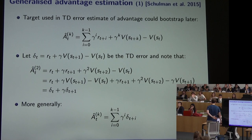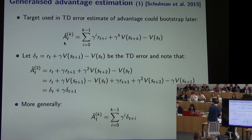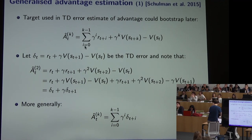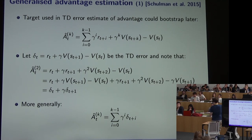This yields an approach called Generalized Advantage Estimation (GAE). We have an advantage function with superscript k, where k indicates how long we wait before bootstrapping. k equal to the horizon gives REINFORCE; k equal to one gives a traditional actor-critic. For any value of k we get intermediate estimates using a certain number of sample rewards before bootstrapping off the critic.